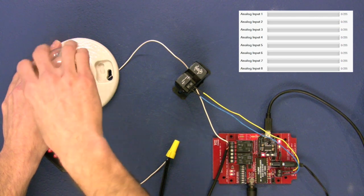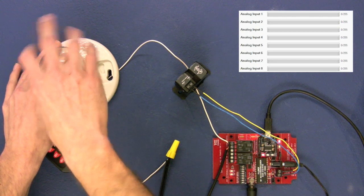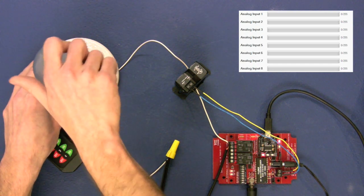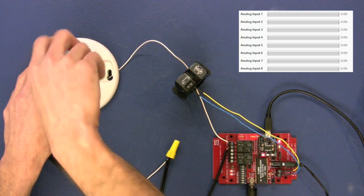Now we'll switch over to a slightly larger light bulb for comparison. You'll see this slightly larger light bulb, which pulls more current than the previous light bulb, will read higher on our analog input 8.